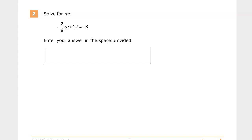This is a grade 7 math practice test for TNReady. Question, at least on this version, who knows in the future, number 2. The question says solve for m, and the original equation is negative two-ninths m plus 12 equals negative 8.